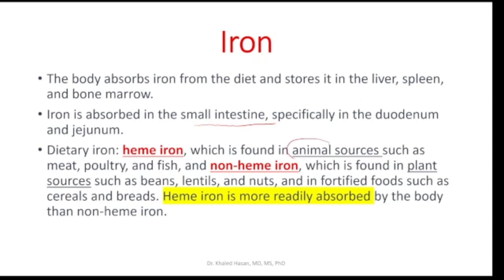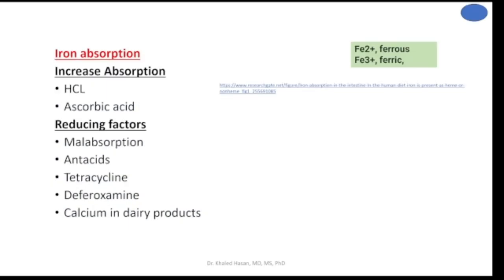We have two types of iron available inside the blood and cells: ferrous form, Fe2+, and ferric form, Fe3+. For iron absorption, an acidic environment increases absorption. If the patient takes ascorbic acid — vitamin C — this increases absorption of iron.